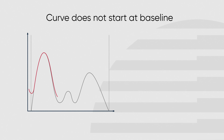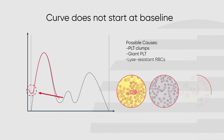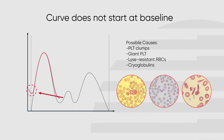An abnormal high at the low discriminator could have several possible causes, such as platelet clumps, giant platelets, lysis-resistant red blood cells, or cryoglobulins. The reason is that the analyzer is unable to differentiate between these cells, fragments, and complexes, as they are very similar in size and the populations therefore merge.